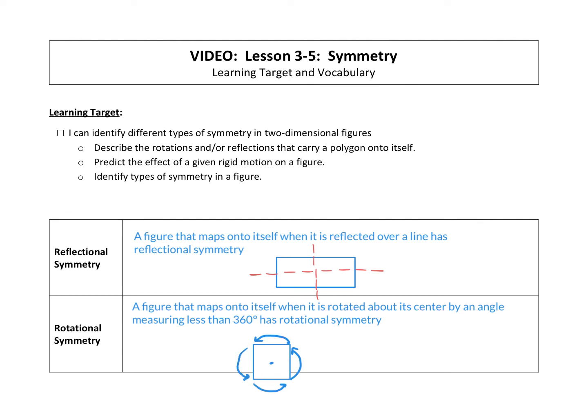If it rotates again, it would be the square again. So a figure has rotational symmetry if it rotates about the center by an angle less than 360 degrees and it maps back onto itself.